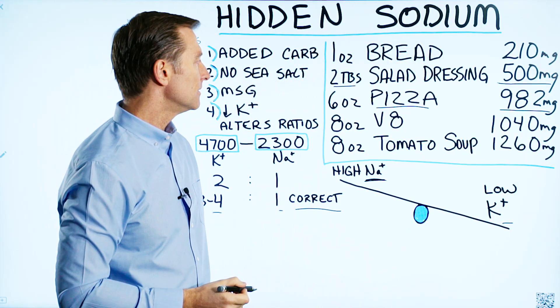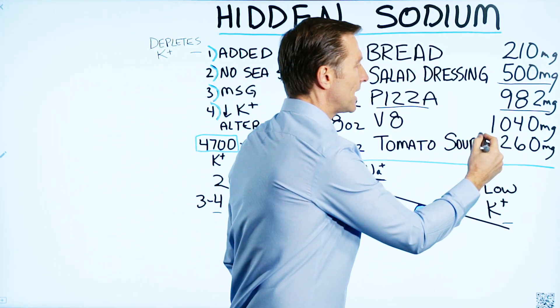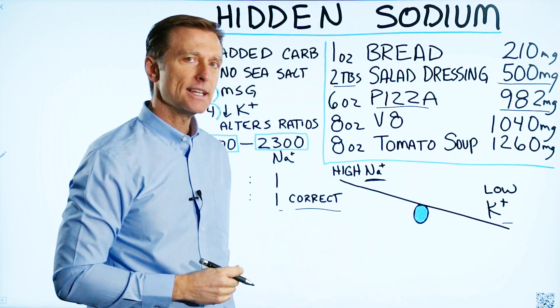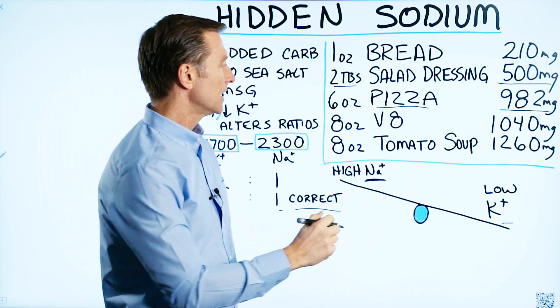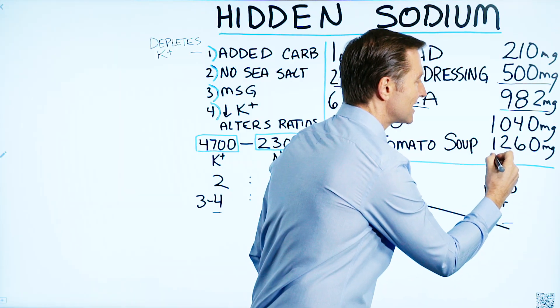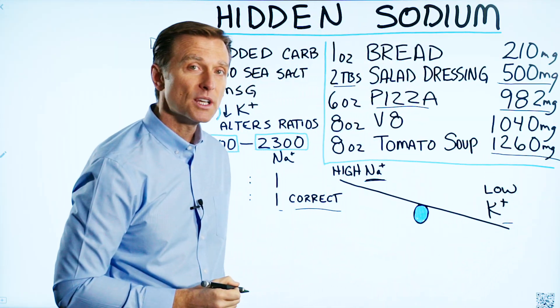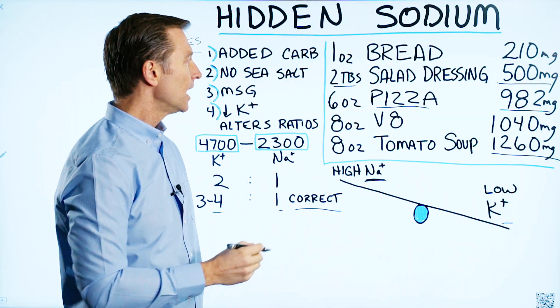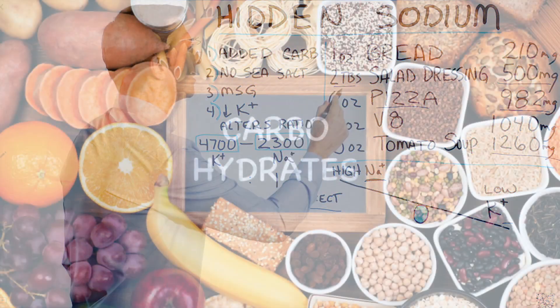Eight ounces of V8 will give you over 1,000 milligrams, and one little can of tomato soup is 1,260 milligrams of sodium. That's a tremendous amount of sodium with the carbohydrates.